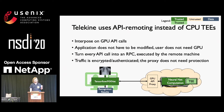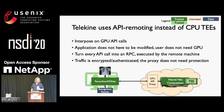We do this with a technique called API remoting, which means we substitute our own library for the GPU library. The application can just make API calls like it normally does — from the application's perspective, it looks like there's a local GPU, even though there isn't one. We take those API calls, turn them into RPCs, and forward them over the network to be executed on the cloud machine by an API proxy running on the CPU there. Since we're communicating with the TEE and the GPU, all of that communication is protected, so this proxy itself doesn't need to be protected.